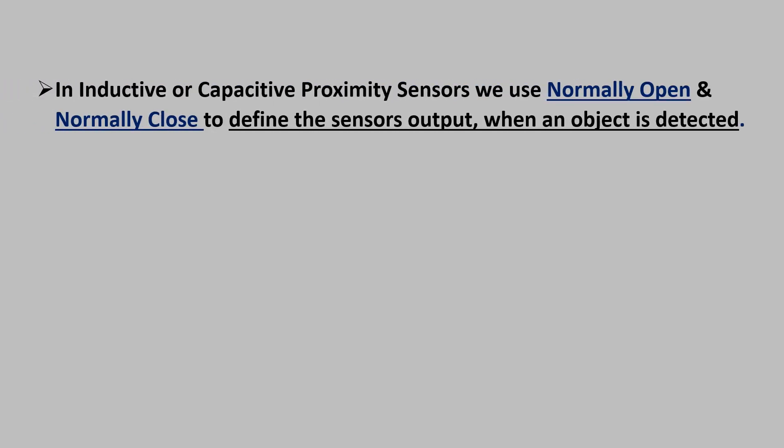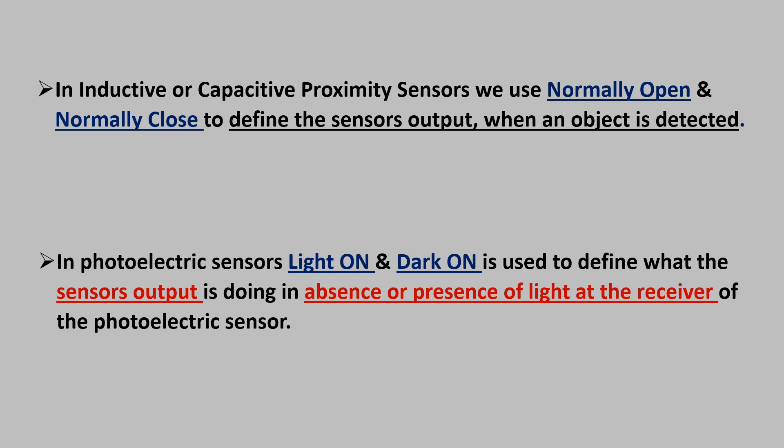As we know for inductive or capacitive sensors, we use normally open and normally closed to define the sensor's output when an object is detected. Similarly, in photoelectric sensors, light on and dark on is used to define what the sensor's output is doing in absence or presence of light at the receiver of the photoelectric sensor. These terms apply only to photoelectric sensors.